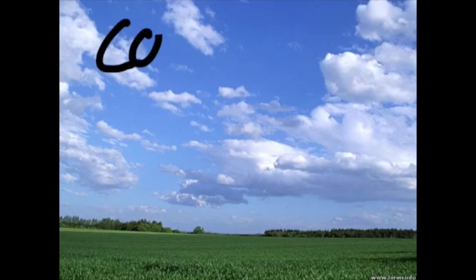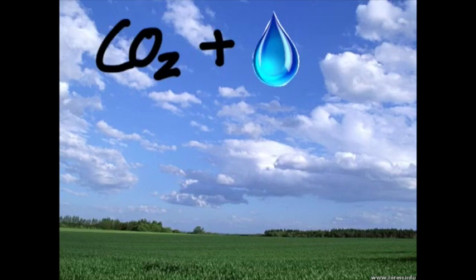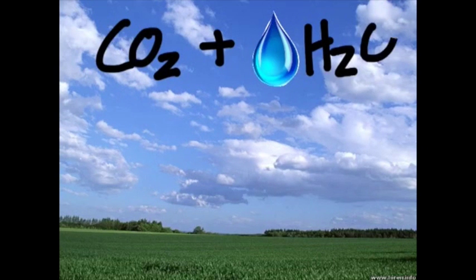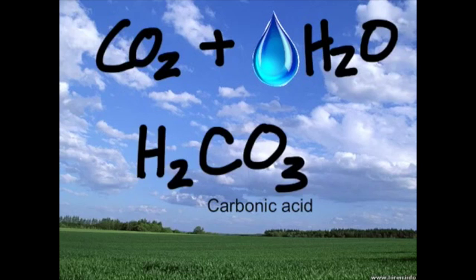When CO2 in the atmosphere combines with water, or H2O, the result is carbonic acid. Carbonic acid is a weak acid, but it does enough to make the rain slightly acidic, giving it a pH of about 5 or 6.